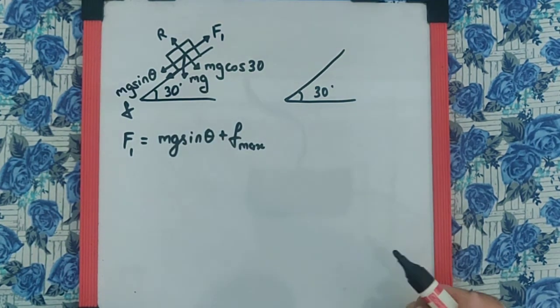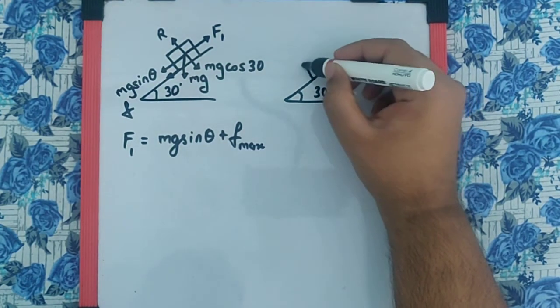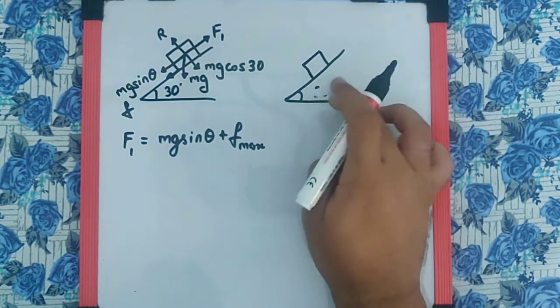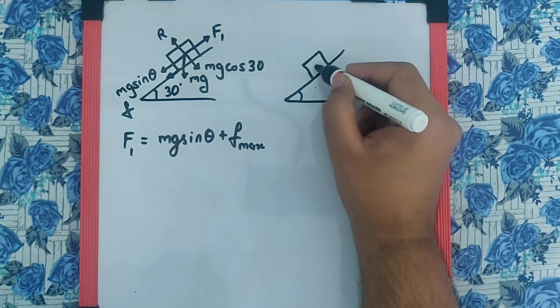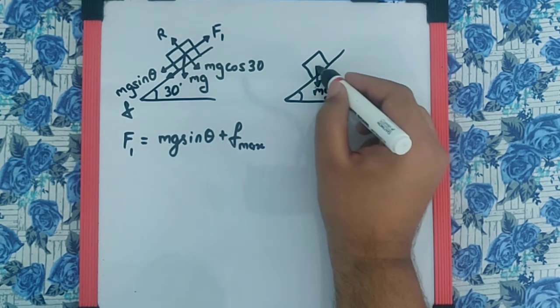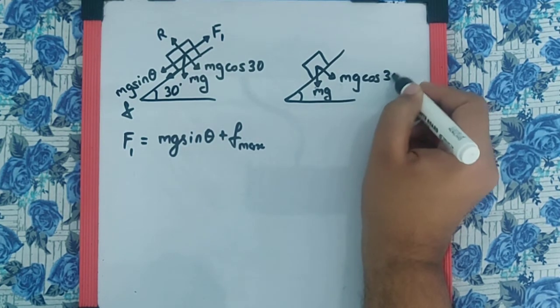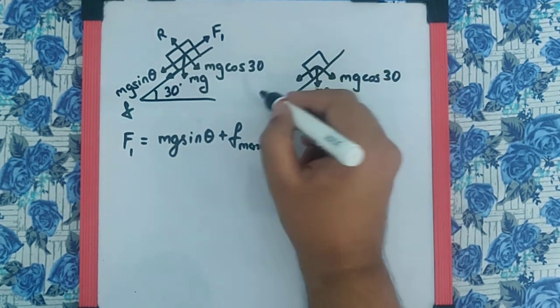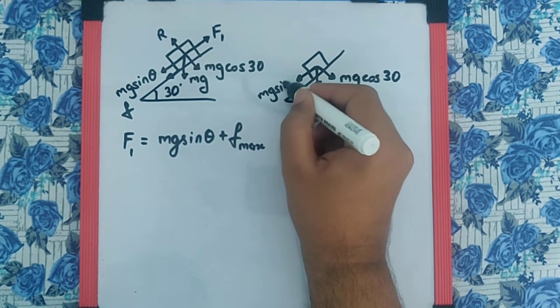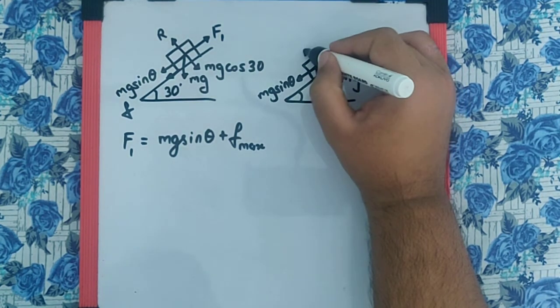And the second case where we will have again mg acting vertically downwards, which can be resolved and we have mg cos 30 and mg sin 30, the normal reaction over here.